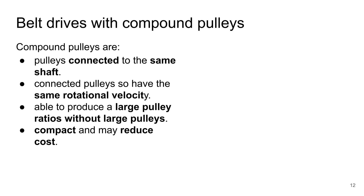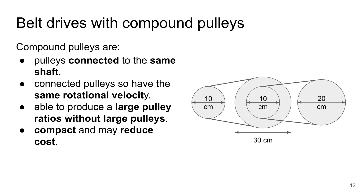Belt drives can be used with compound pulleys. Compound pulleys are pulleys connected to the same shaft. Pulleys connected on the same shaft have the same rotational velocity, and they are able to produce a large pulley ratio without having large pulleys. Therefore, compound pulleys are compact and can reduce cost because they reduce the need for very large pulleys to achieve large pulley ratios.